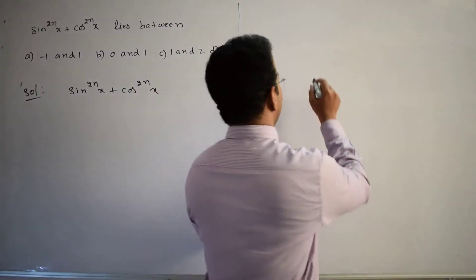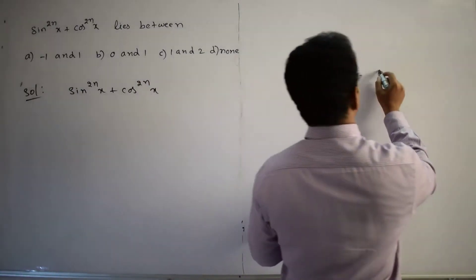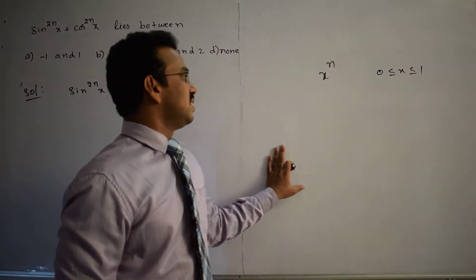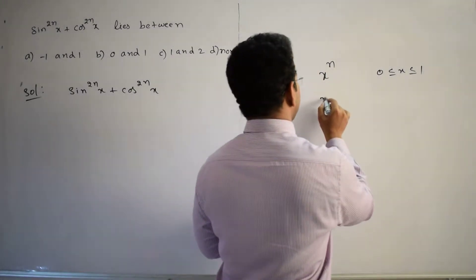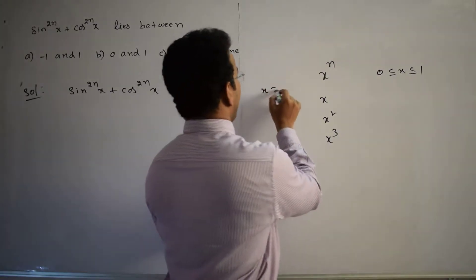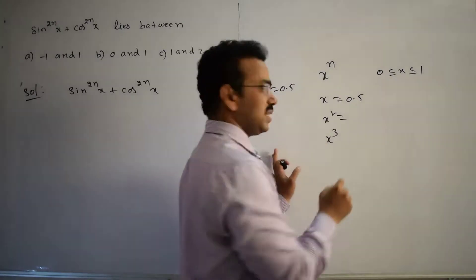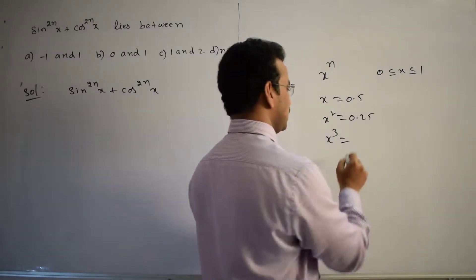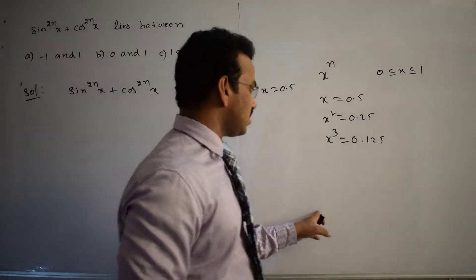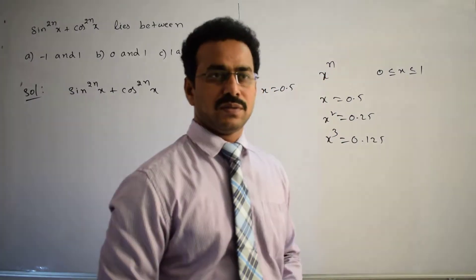Before evaluating this expression, let me explain a small concept about x^n. Suppose x lies between 0 and 1, i.e., 0 ≤ x ≤ 1. If we calculate x, x², x³ — for example, if x = 0.5, then x = 0.5, x² = 0.25, x³ = 0.125.